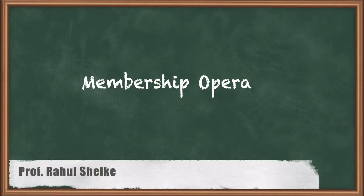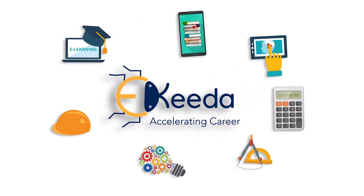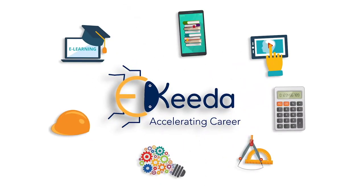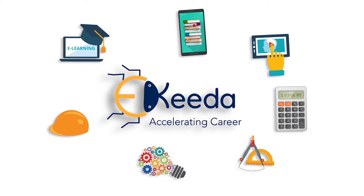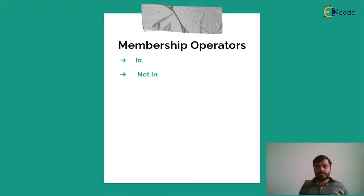Membership operator is an operator which is responsible for checking whether one object is a member of another object. There are two membership operators: 'in' and 'not in'.